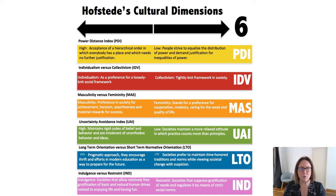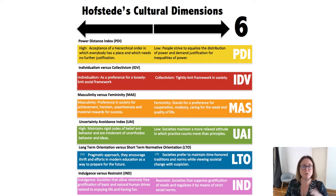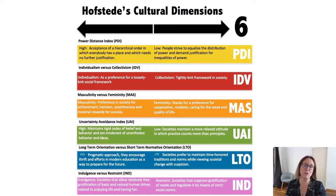The fourth dimension is uncertainty avoidance. It describes the distinction between maintaining rigid codes of belief and practices that are intolerant of unorthodox behaviors and ideas — where there is a strong rigid structure in society and social norms and protocols must be followed — versus societies with low uncertainty avoidance, where there's a more relaxed attitude to how people should behave, and the practice counts more than the principles.